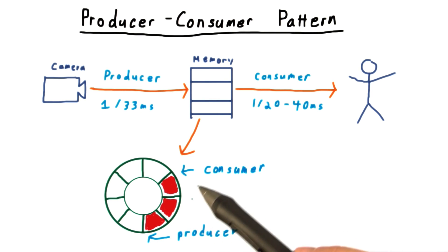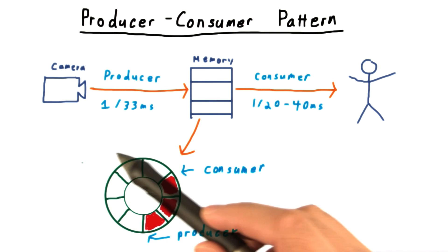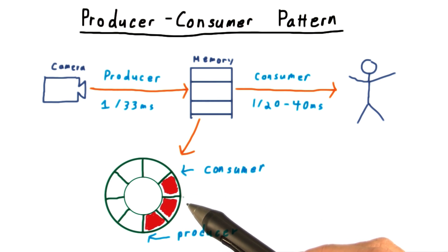And we should imagine the producer and consumer threads chasing each other around this ring, with the producer one writing frames, making them red, and the consumer one running behind, turning them back to white. That is, empty or processed. Though, of course, the consumer will never pass the producer.